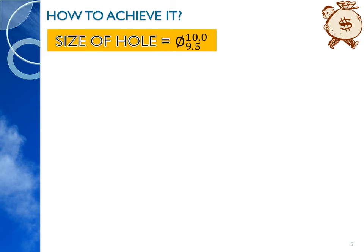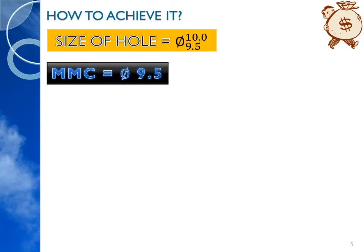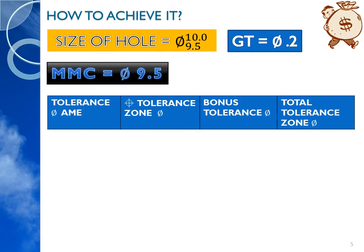The size of the hole from the drawing is 9.5 to 10. The MMC is diameter 9.5, and the geometric tolerance available from the feature control frame is diameter 0.2. This is the information we are going to tabulate during our calculations. The columns are: diameter of actual mating envelope, position tolerance zone, bonus tolerance, and total tolerance zone — all in terms of diameters.